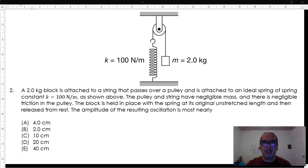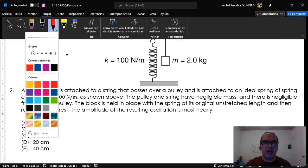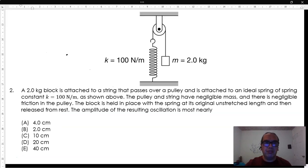A 2.0 kg block is attached to a string that passes over a pulley and is attached to an ideal spring of spring constant k equals 100 N/m as shown above. The pulley and string have negligible mass and there is negligible friction in the pulley. The block is held in place with the spring at its original unstretched length and then released from rest. The amplitude of the resulting oscillation is most nearly: